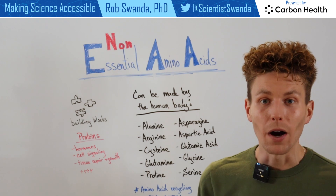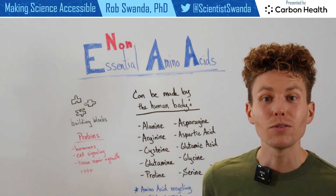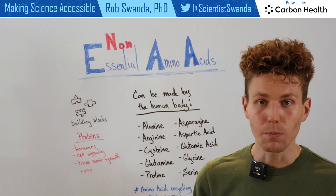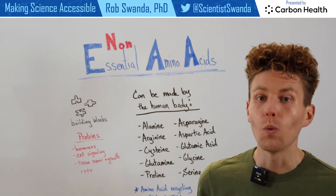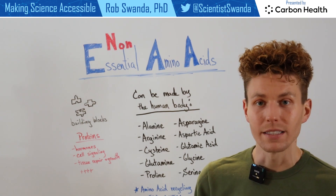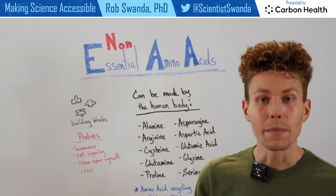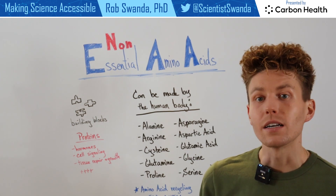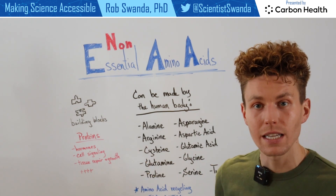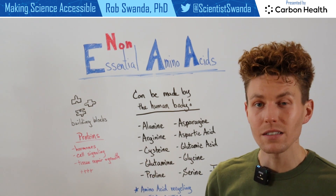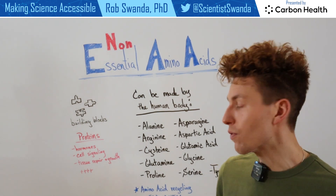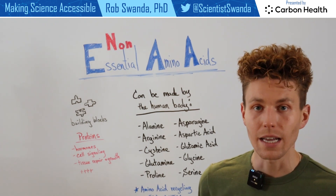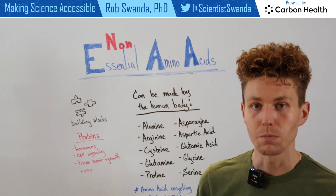Even though our bodies know how to make these amino acids, it's still really important that we have an overall well-balanced diet related to amino acid and protein production. That's because often a lot of these non-essential amino acids are actually made from essential amino acids through different enzymes that our bodies produce.